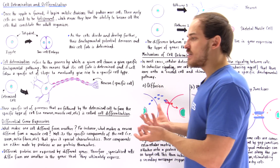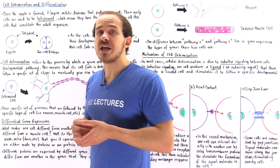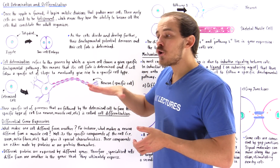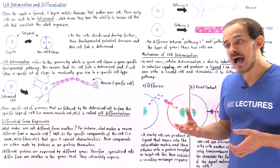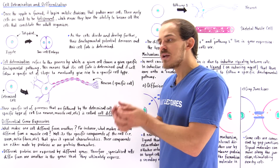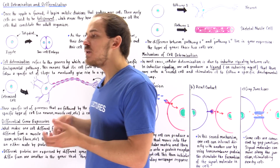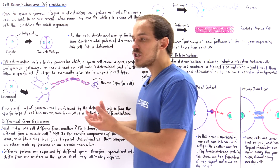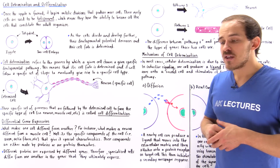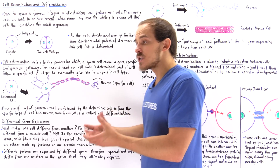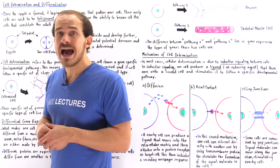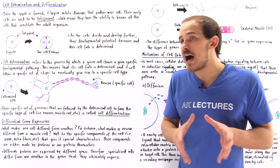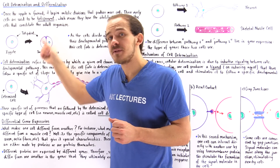A good analogy to this is the way that we choose our careers. At the early stage of a person's life, before they begin school, they have the potential to become any professional — they can become a physician, a nurse, a police officer, a banker, a quantitative analyst. So basically, at the early stages of our lives, we are totipotent.